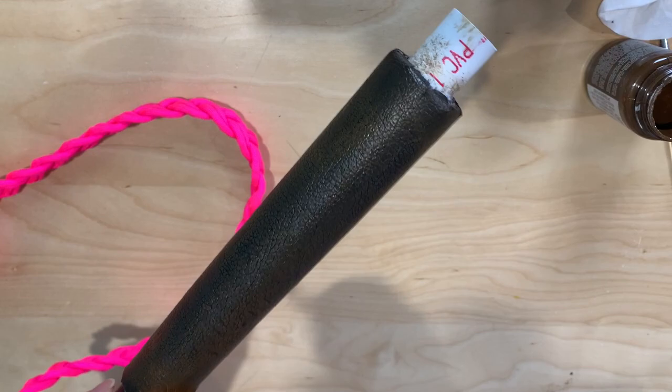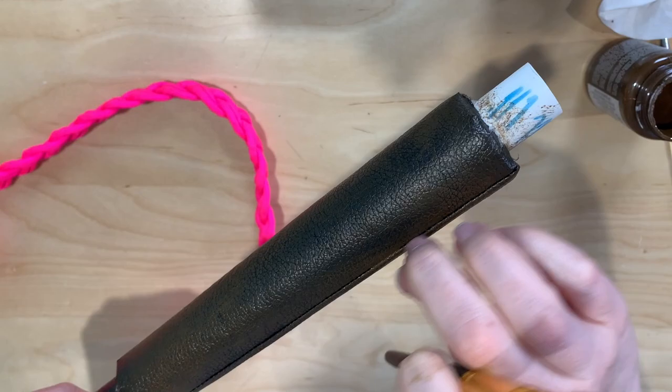Lastly, I finished decorating the handle by using some Plaid FX paint to dry brush over the top of it and add a little bit more dimension to the pleather.